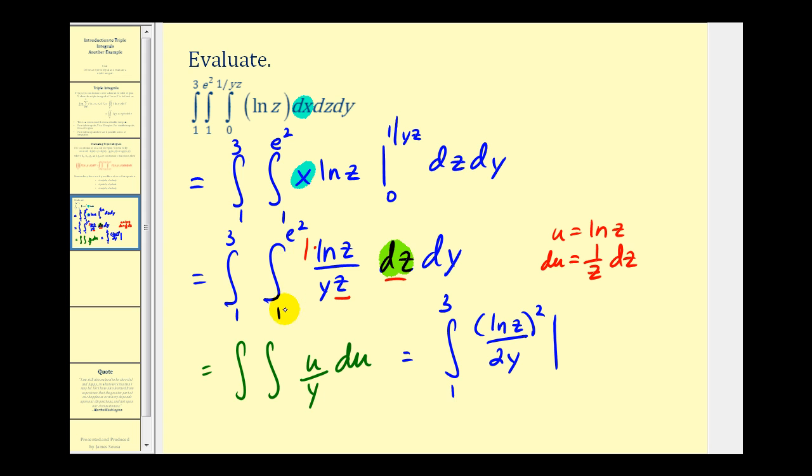And the limits of integration were from one to e squared. And because we integrate with respect to z, we're replacing z with e squared. Let's go ahead and do that on the next slide.